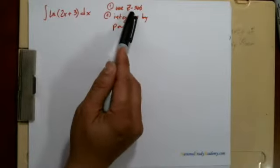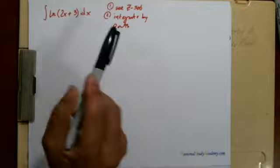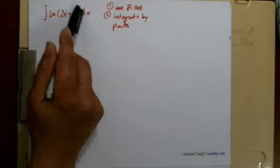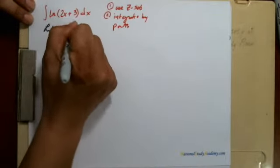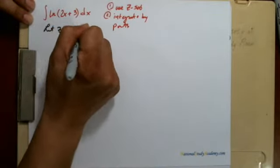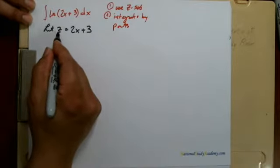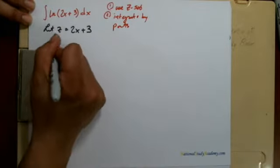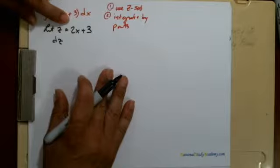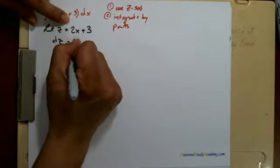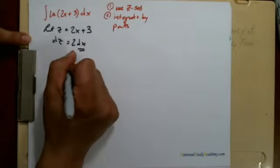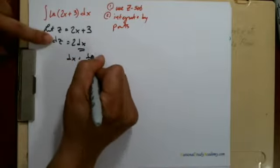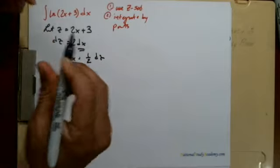We're going to use what's called the z substitution and integration by parts. First, we're going to use the z substitution here. We're going to let z equal the inside of this, which is just 2x plus 3. We take the derivative of the left side, which is dz. We take the derivative of the right side, which is 2 dx, and then the plus 3 goes away. Solving for dx right here, dx is equal to 1 half dz, and that's going to be substituted.